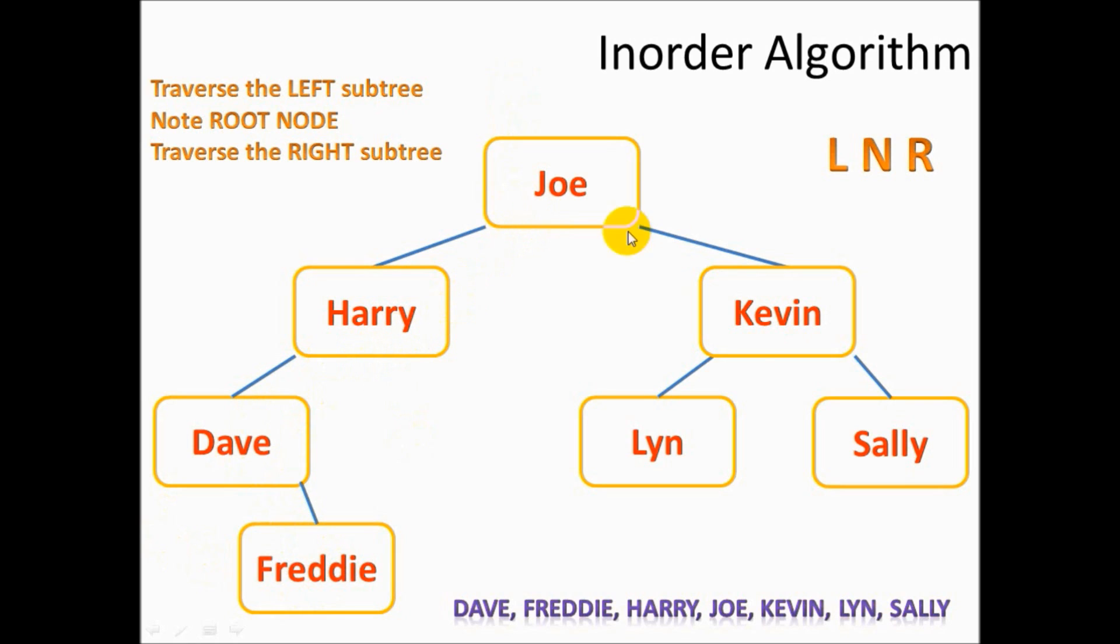So Dave. Freddie. Remember we can't go left here. Harry. Joe. Kevin. Lynn. Back to Kevin. Down on the right. So left. Node. Right. Back to the node. Another node. Up to the other node. Down the right. And then left. Lynn. Back to the node. Right. Sally. There's our order. And it's in alphabetical order.